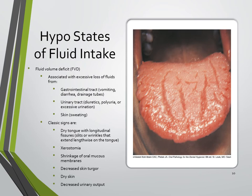In hypo states, there is a fluid volume deficit where more liquid is being given off than consumed. This is associated with excessive loss from the gastrointestinal tract through vomiting, diarrhea, or drainage tubes; from the urinary tract through diuretics, polyuria, or excessive urination; and from the skin through sweating. A lot of exercise can cause dehydration.